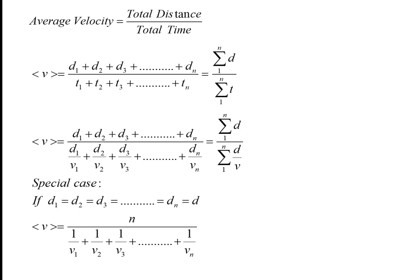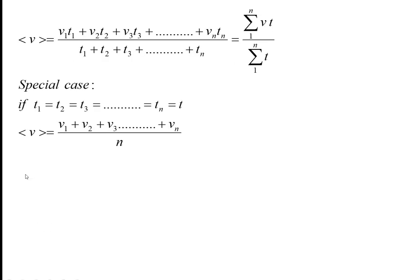Special case: if all distances are equal and the journey has n parts, the formula becomes n divided by (1/v₁ + 1/v₂ + ...). For two equal-distance parts: 2 / (1/v₁ + 1/v₂). For three equal-distance parts: 3 / (1/v₁ + 1/v₂ + 1/v₃).